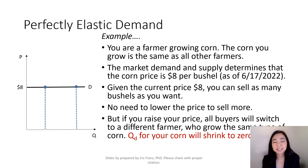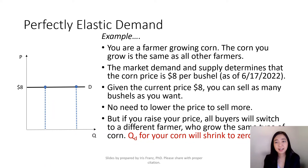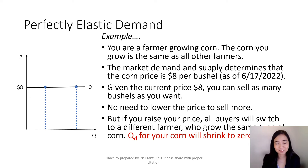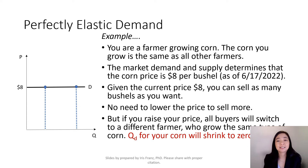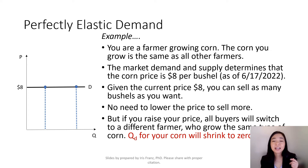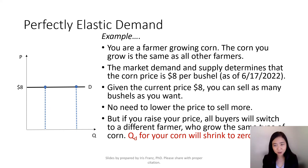Here is an example of perfectly elastic demand. Suppose you are a farmer growing corn, and the type of corn you're growing is exactly the same as all other farmers. The market demand and supply will determine the price of corn — say it's $8 per bushel as of June 2022. Given that current price of $8 per bushel, you can sell as many bushels as you want, but it has to be at $8. There is no need for you to cut price to sell more because everyone else is selling corn at $8 per bushel.